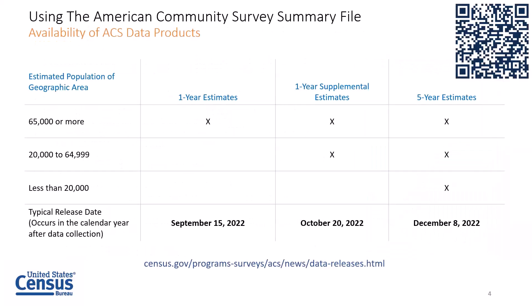The ACS provides three different data products: one-year estimates, one-year supplemental estimates, and five-year estimates. The 2021 product release dates are shown on the slide. The one-year data were released recently this month on the 15th.